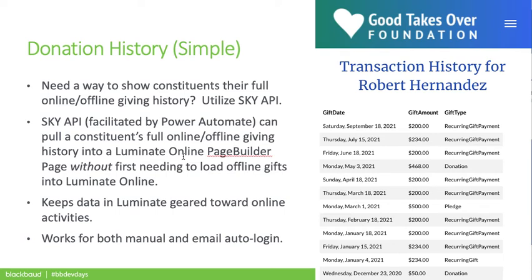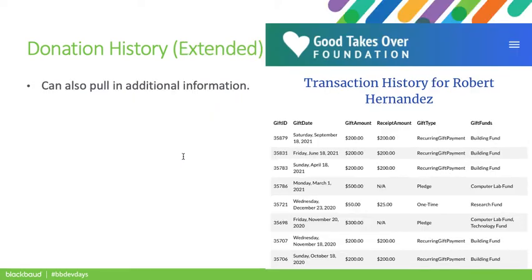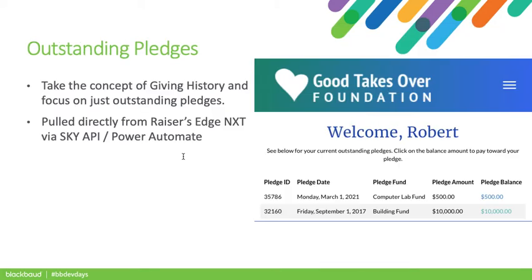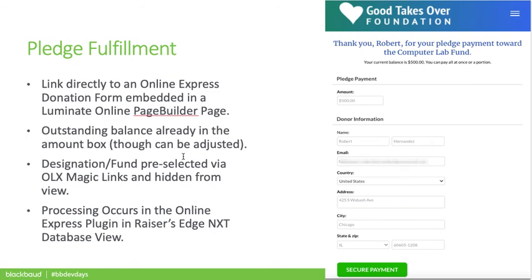When we start talking about donation and giving history, this is where we start relying more and more on Sky API. Some options for showing a constituent their entire online-offline giving history rely on bringing offline gifts into Luminate Online. By using the Sky API, we can present constituents their entire giving history without needing to go through that process. This can be expanded to show additional information such as receipt amount, the type of gift, and the gift funds. We can also focus this on presenting outstanding pledges to the constituent and providing them a link to pay toward those pledges.